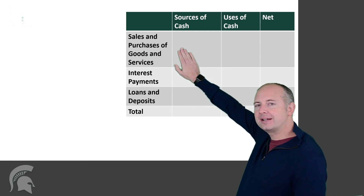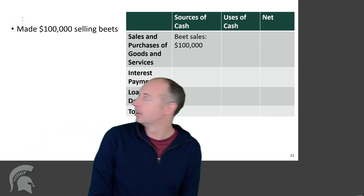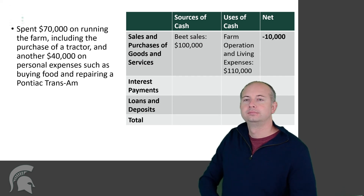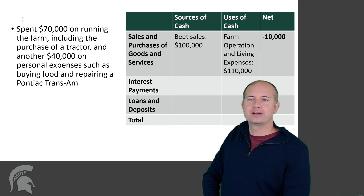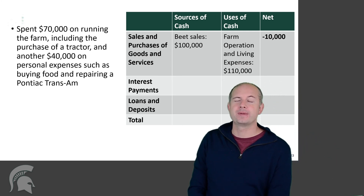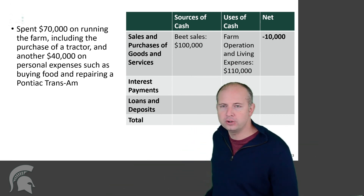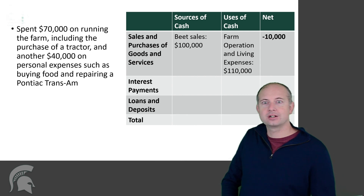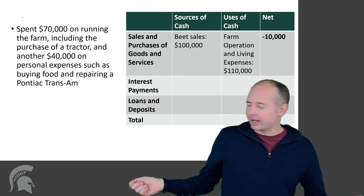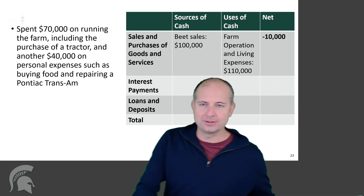Our family business is Schrute Farms. Last year they made $100,000 selling beets, spent $70,000 running the farm including the purchase of a tractor, and another $40,000 on personal expenses such as buying food and repairing a Pontiac Trans Am. Total spending was $110,000. Notice that the net is $100,000 minus $110,000 — so on goods and services, Schrute Farms was $10,000 in the red.